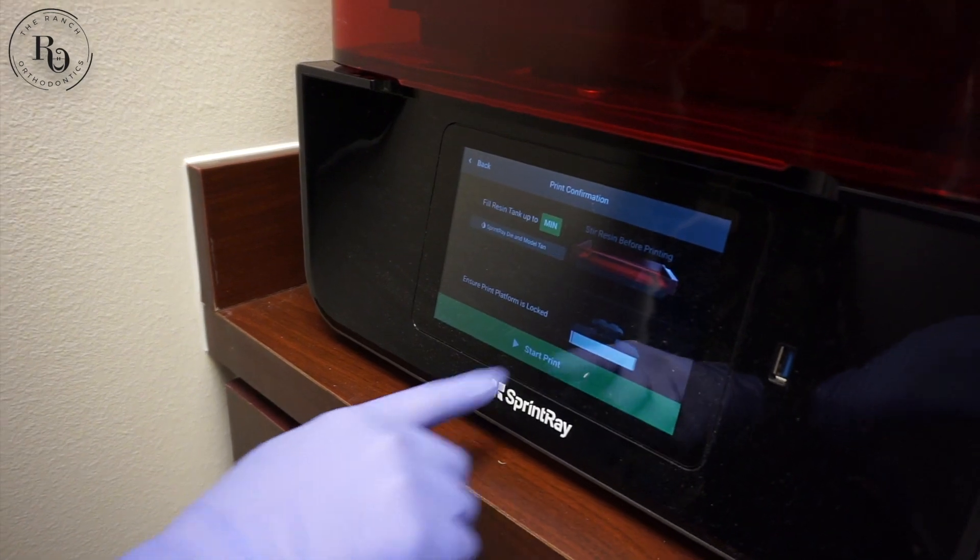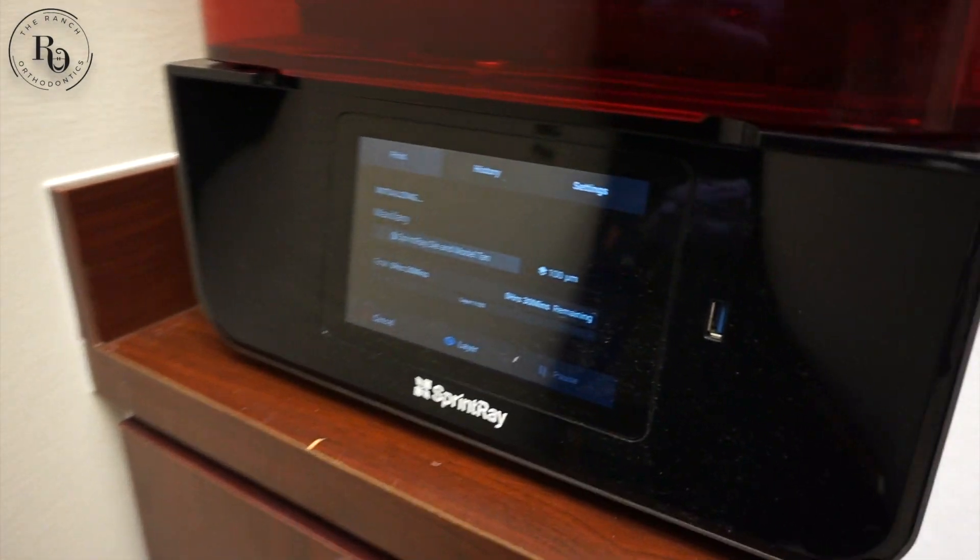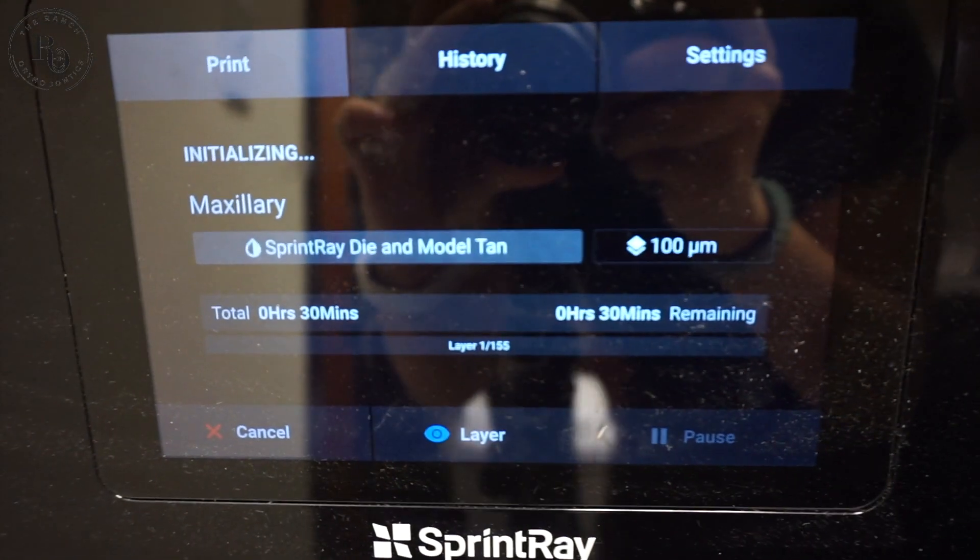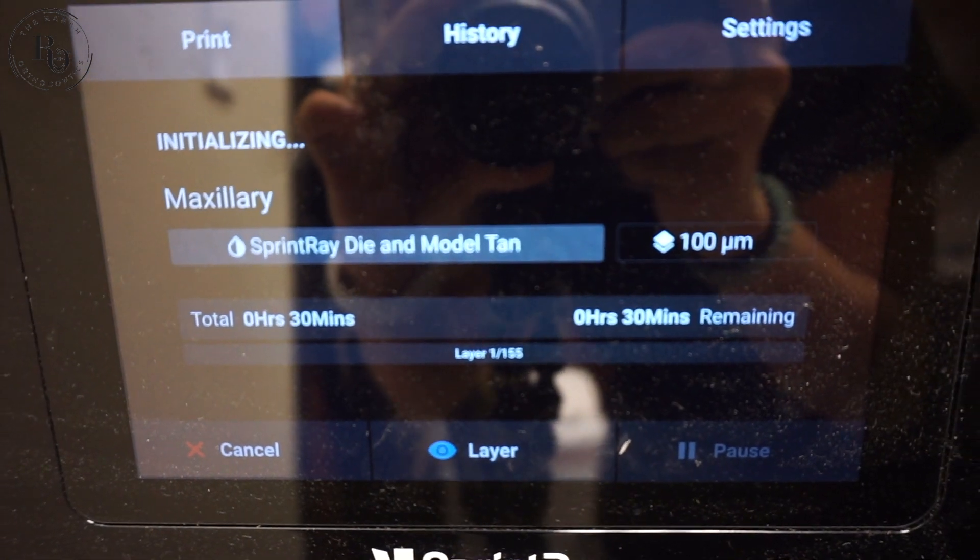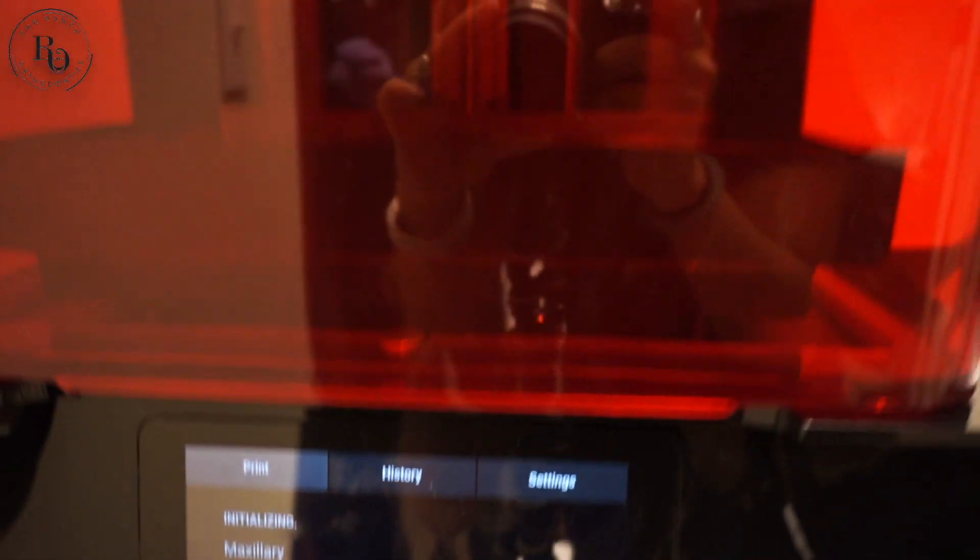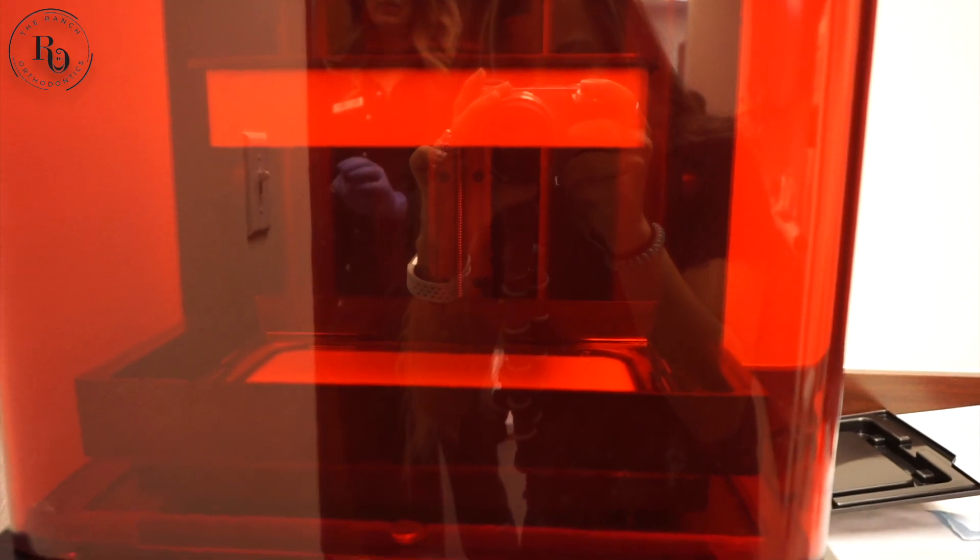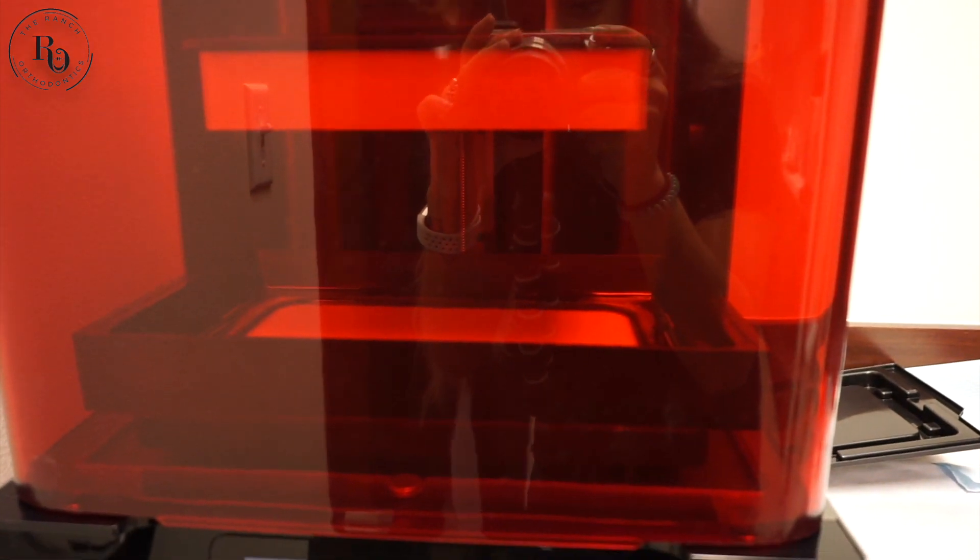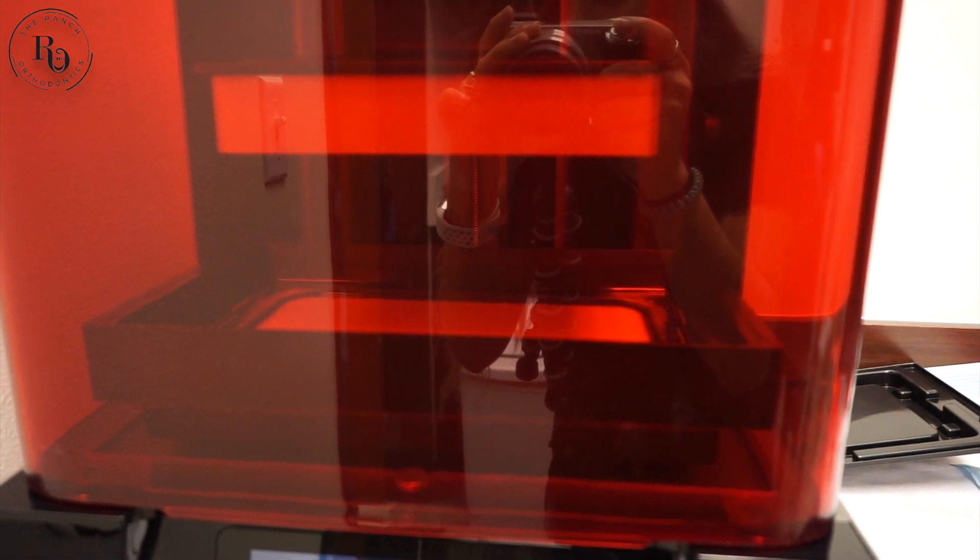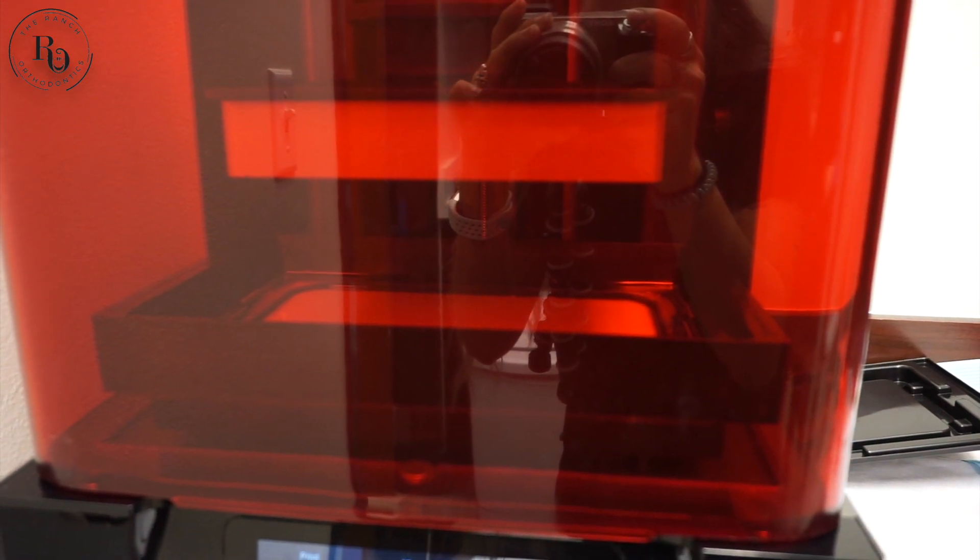And then we're just starting the printer here. All the prints are loaded and we just press start. You can see there are 30 minutes of prints and 155 layers for this print, so it's going to light cure each individual layer of those 155 layers and then we'll have a beautiful printed set of models at the end.